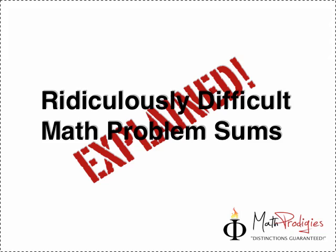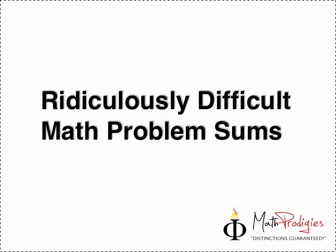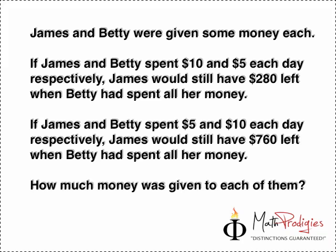Here is where we explain the most difficult, actually ridiculously difficult math problem sums. Today I have one ridiculously difficult math problem sum for you. Some of you might have already tried this out, but I'm going to explain it again because most of you didn't get it the first time. The question is: James and Betty were given some money each, not the same amount, but some money each. If James and Betty spent $10 and $5 each day respectively, James would still have $280 left when Betty had spent all her money.